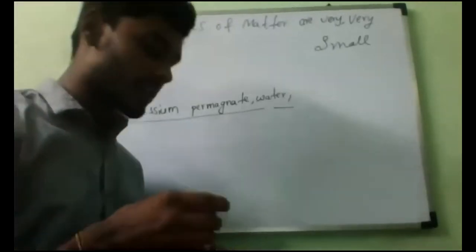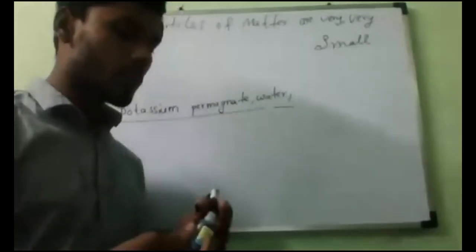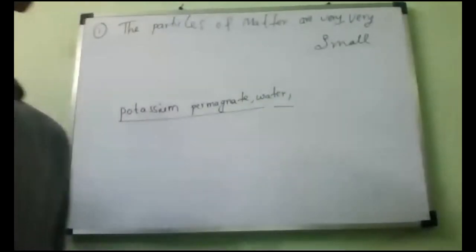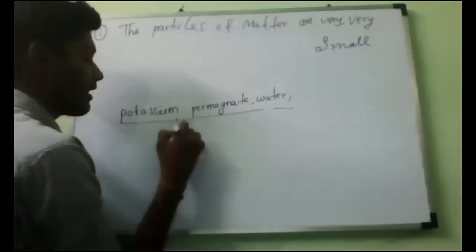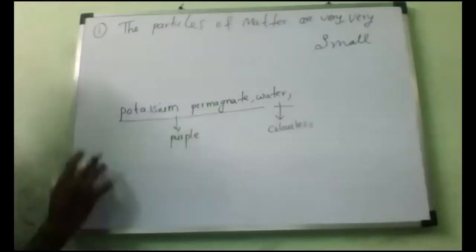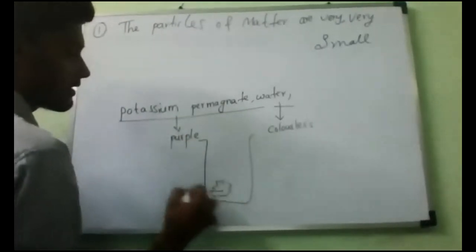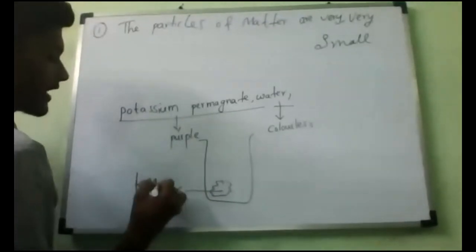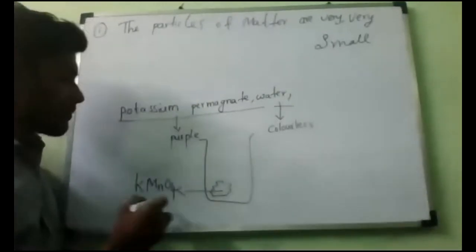This is not a new experiment — we have already studied this. If we dissolve the potassium permanganate in water, it will turn into purple color. Actually, potassium permanganate is in purple color, but water is colorless. So water is a colorless substance. Now, let us take one beaker — I have taken one beaker and here I have kept the potassium permanganate, which is KMnO4. That is the formula. If you will pour the water, potassium permanganate is in purple color and slowly it will start dissolving in water.